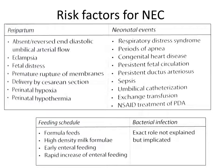Risk factors for NEC include various factors causing perinatal hypoxia, hypothermia, or decreased umbilical arterial blood flow — anything that reduces blood flow to the bowel. These include absent or reversed end-diastolic umbilical arterial blood flow, eclampsia, fetal distress, sepsis with premature rupture of membranes, respiratory distress syndrome after birth, periods of apnea, and congenital heart disease. Persistent ductus arteriosus is another risk factor, either by itself or through NSAID treatment for PDA.